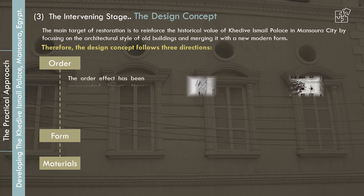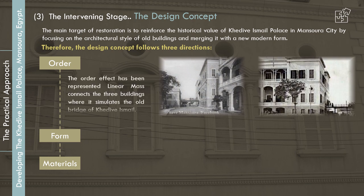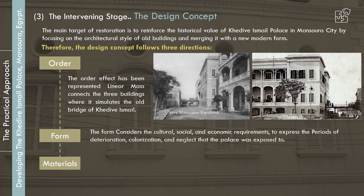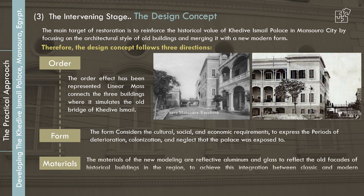The order effect is represented by a linear mass connecting the three buildings, simulating the old bridge of Khadiva Ismail. The form considers the cultural, social, and economic requirements to express the periods of deterioration, colonization, and neglect that the palace was exposed to. The materials of the new modeling are reflective aluminum and glass, to reflect the old facades of historical buildings in the region and achieve integration between classic and modern architecture.